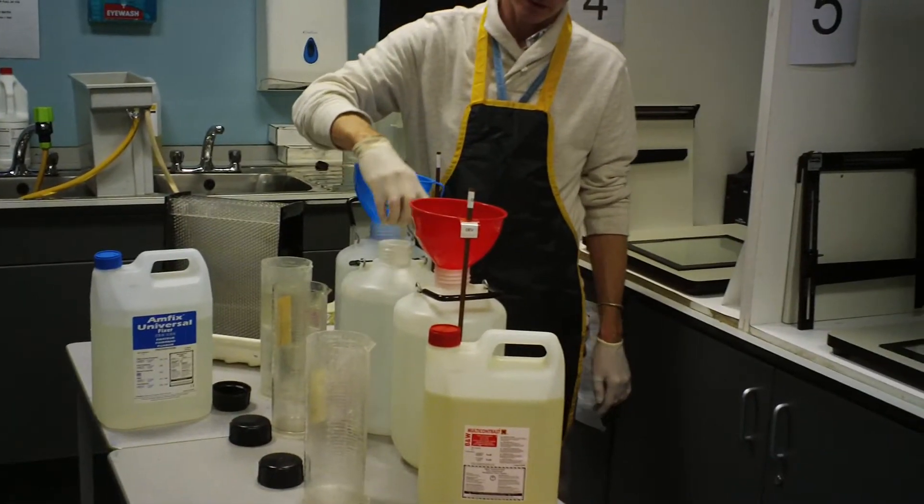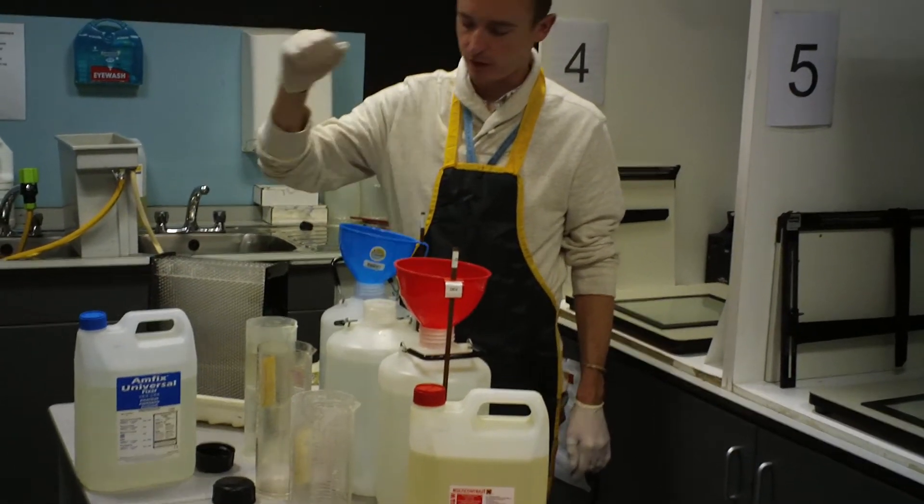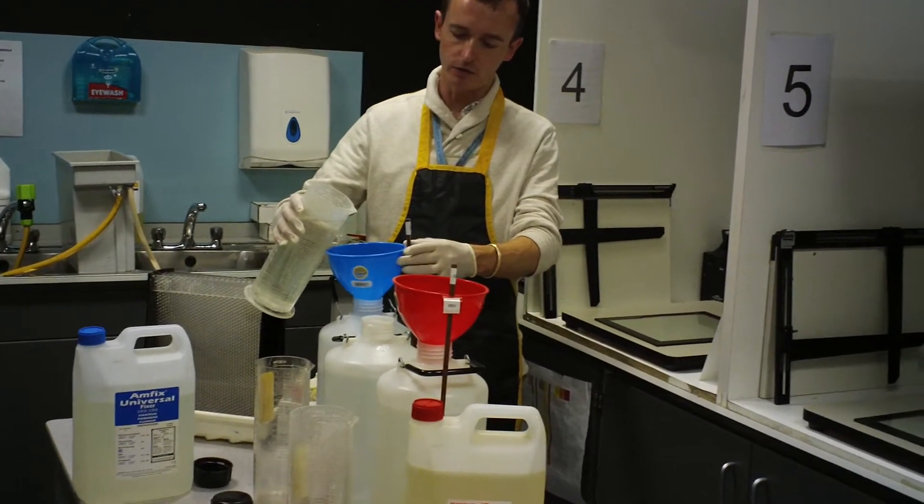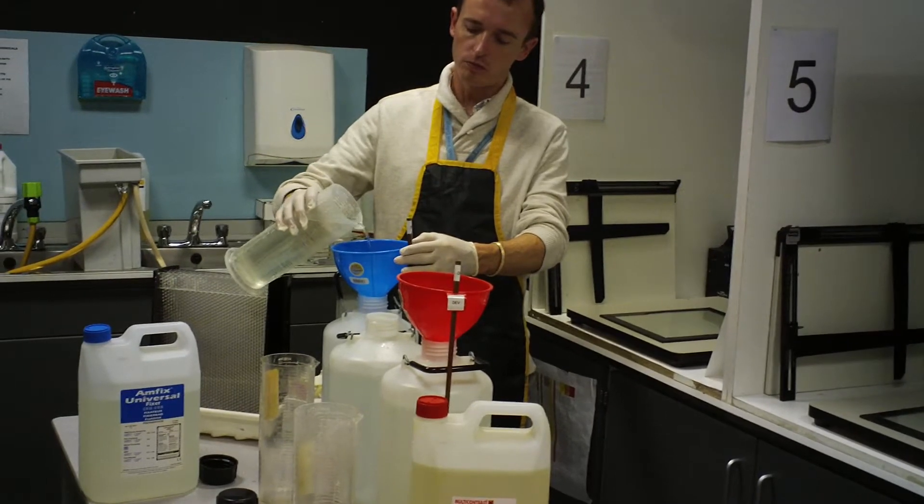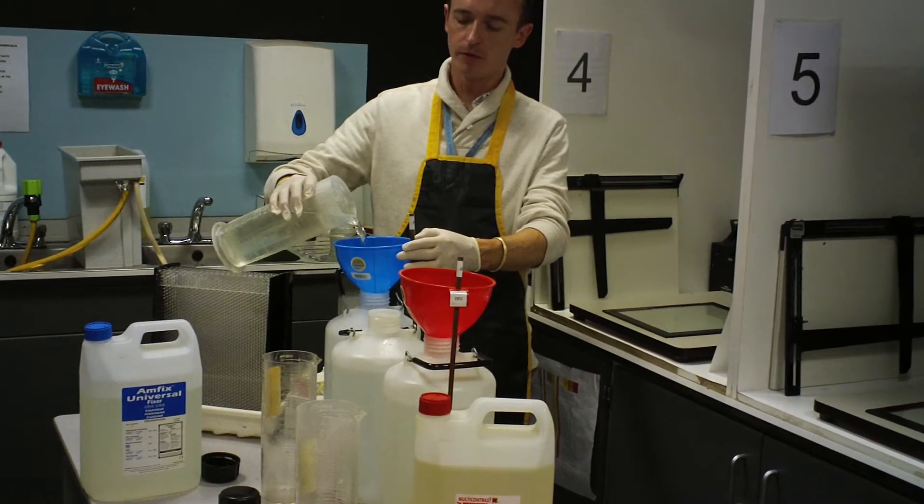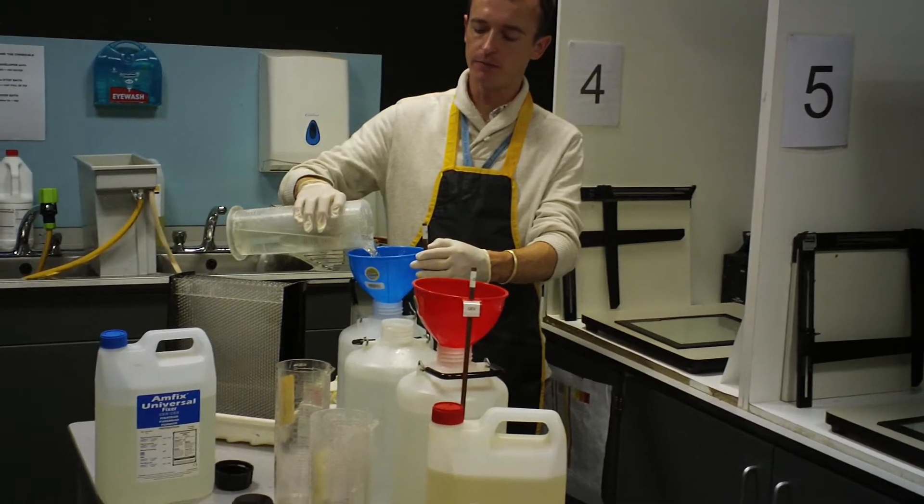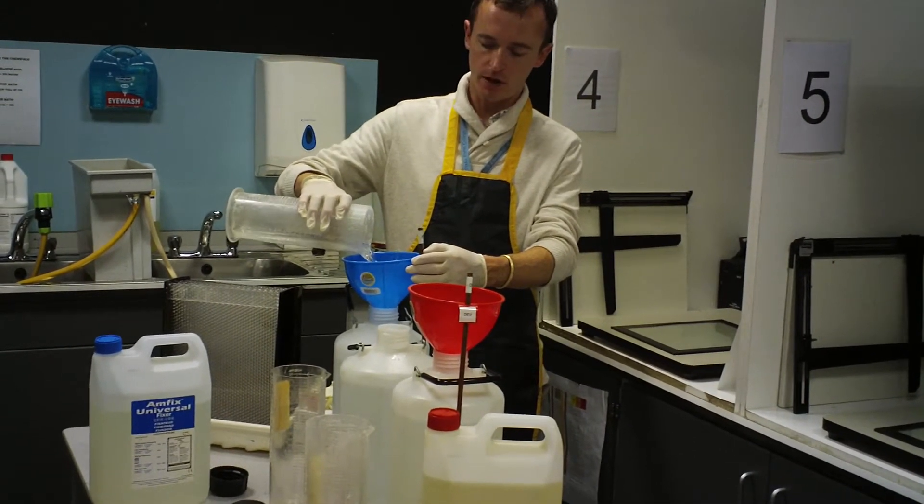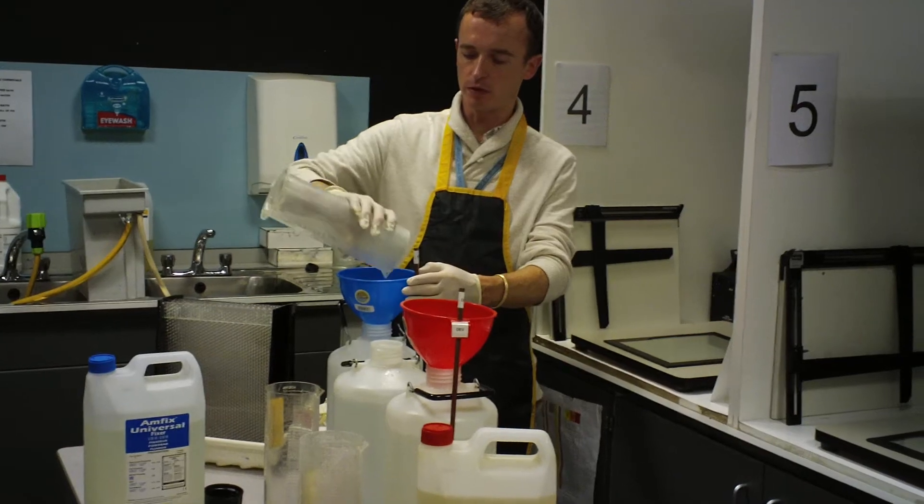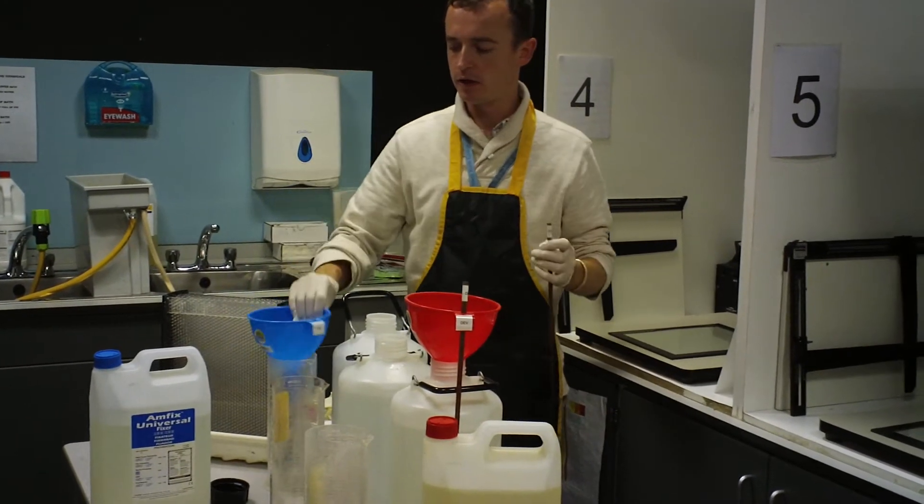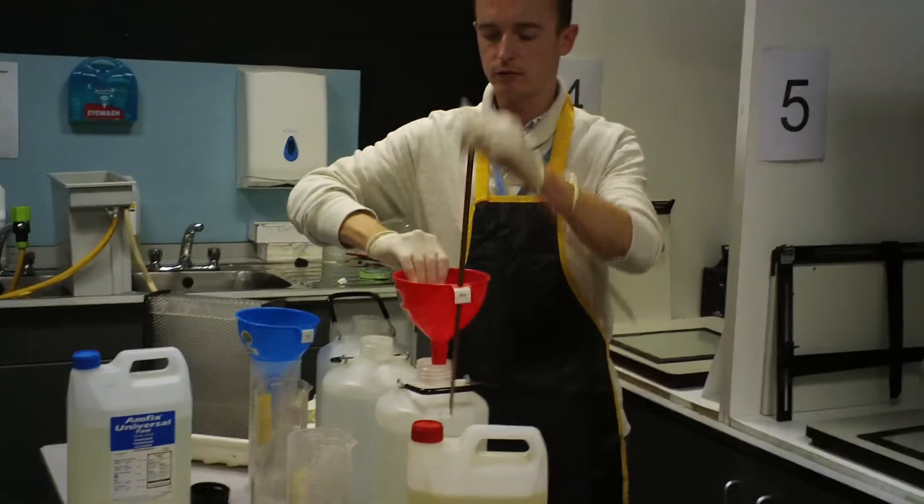And then the fixer itself, which is the last chemical it will go through, is a ratio of 1 to 4, so it's a total of 5 parts. One liter is fixer and then 4 liters of water. And again, we've got these. Anytime you use the funnels, it's a really good idea to clean them afterwards.